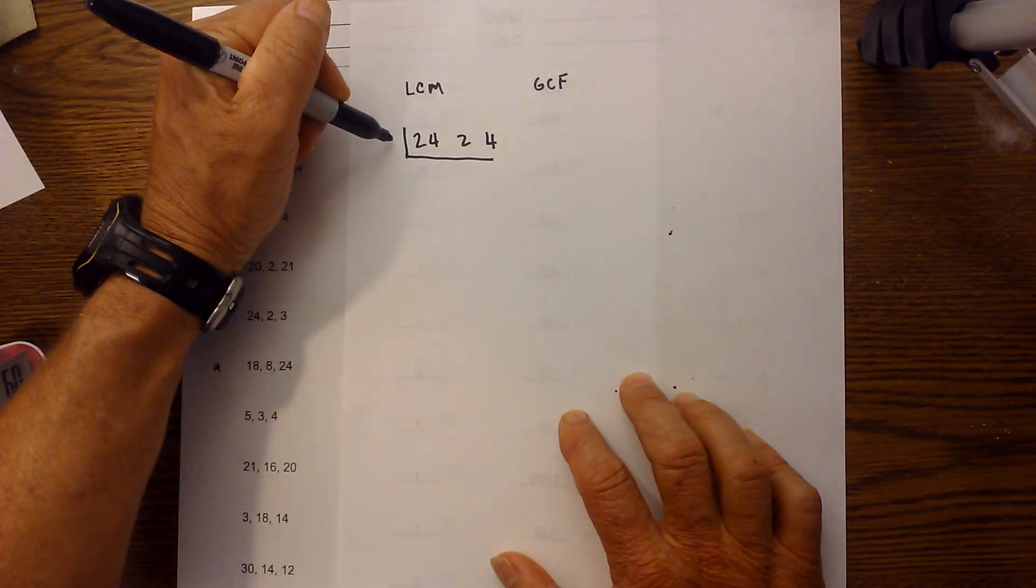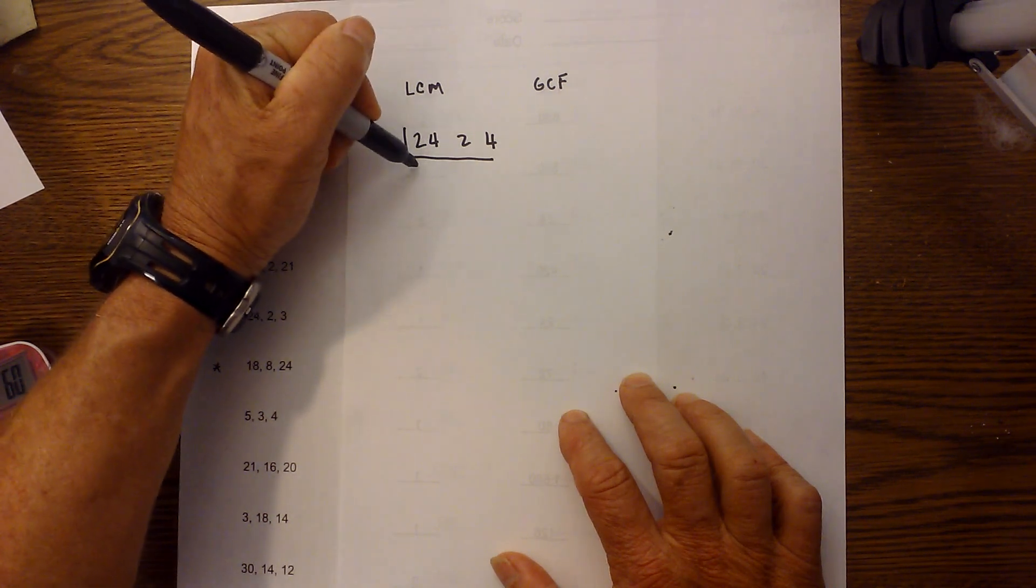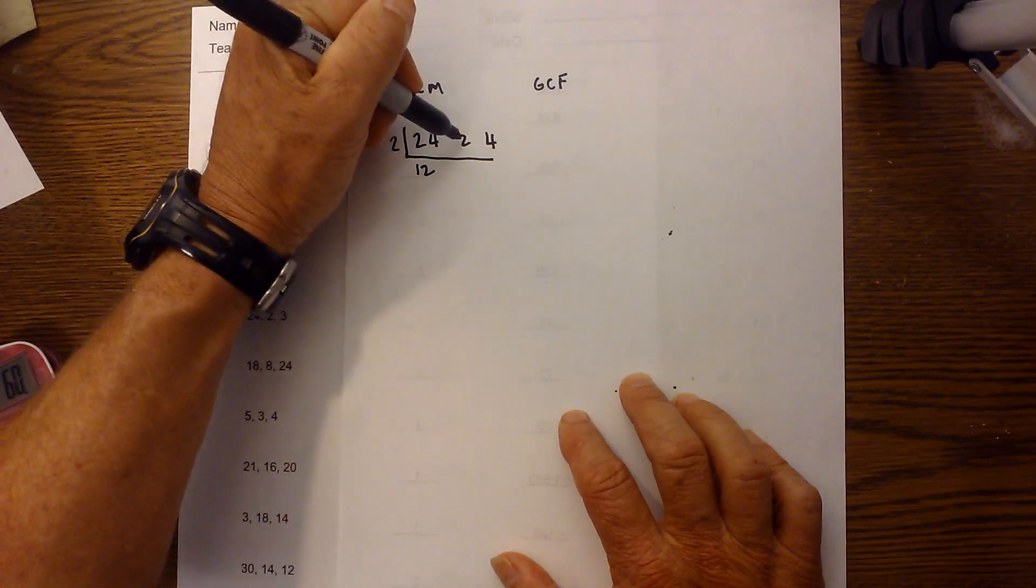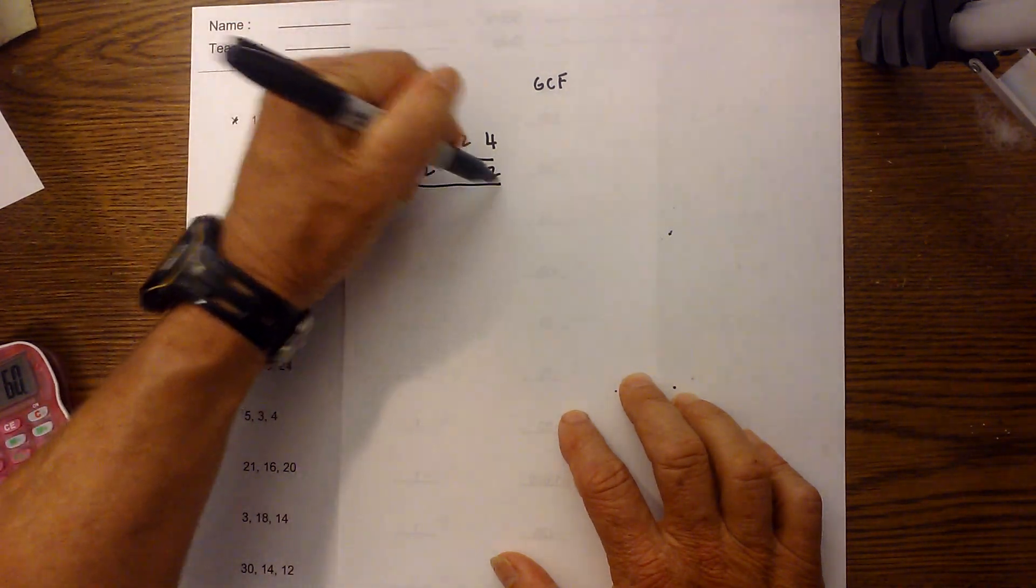You find a number that will divide into all three numbers equally. I know 2 will go into that. 2 goes into 24 twelve times, 2 goes into 2 one time, and 2 goes into 4 two times.